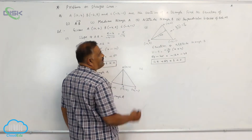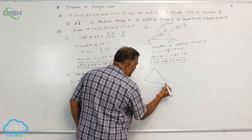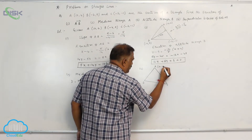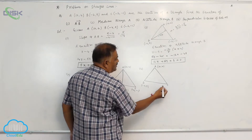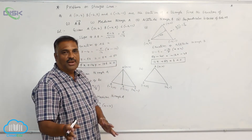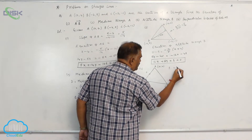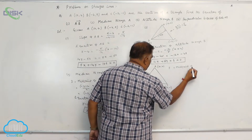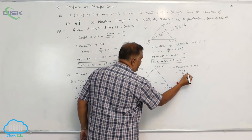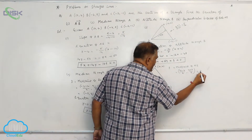The last question: we require the perpendicular bisector of AB. Draw the figure with A(10, 4), B(-4, 9), C(-2, -1). For the perpendicular bisector, we first need the midpoint F of AB. F = midpoint of AB = ((10 + (-4))/2, (4 + 9)/2) = (6/2, 13/2) = (3, 13/2).